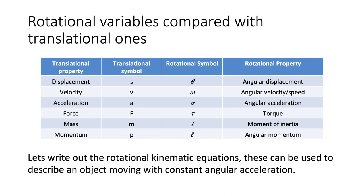We now introduce a table of rotational variables alongside their translational analogues. Displacement (s or x) corresponds to angular displacement (θ). Velocity (v) corresponds to angular velocity (ω). Acceleration (a) corresponds to angular acceleration (α). Force corresponds to torque (τ). Mass corresponds to moment of inertia (I). And momentum corresponds to angular momentum.